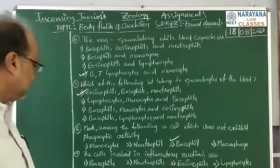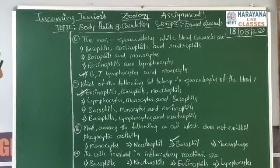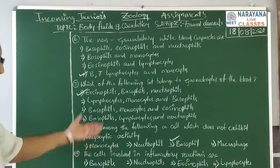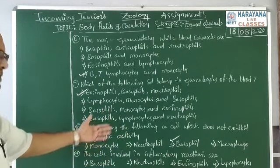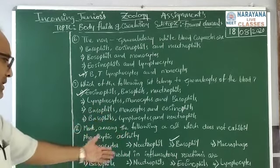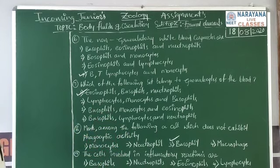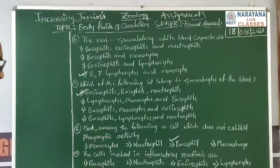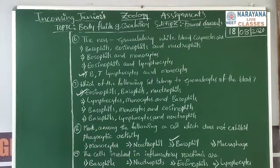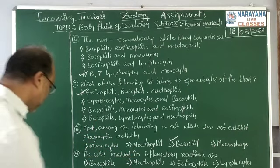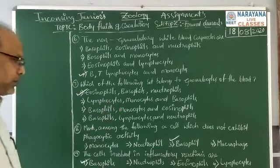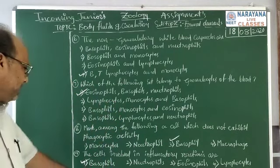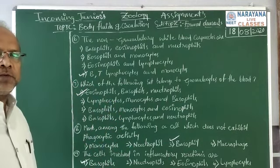The next question: the cells involved in inflammatory reaction. Already explained — when we go through the choices, the cells involved in inflammatory reactions are the basophils. Neutrophils, eosinophils, and lymphocytes have other functions. Basophils are involved in inflammatory reactions.